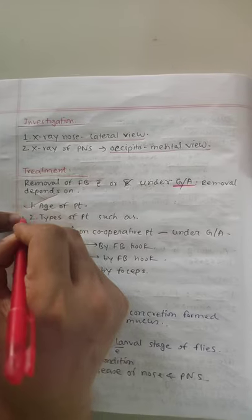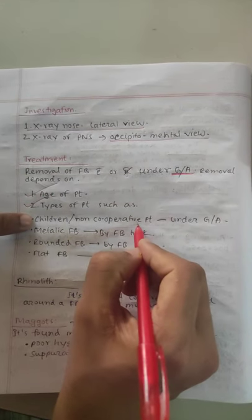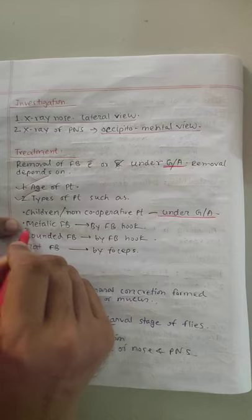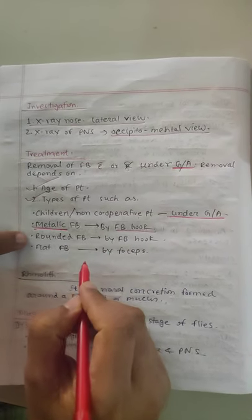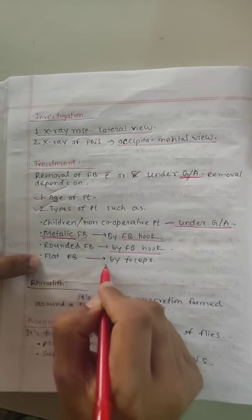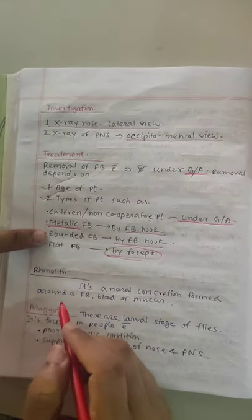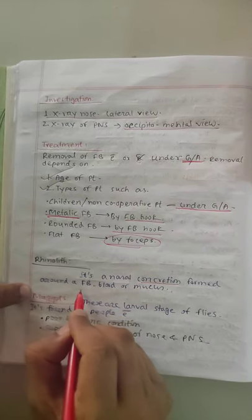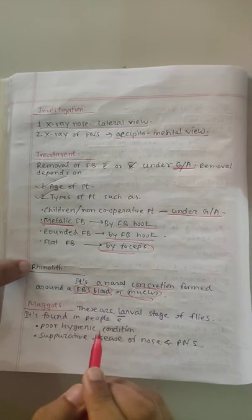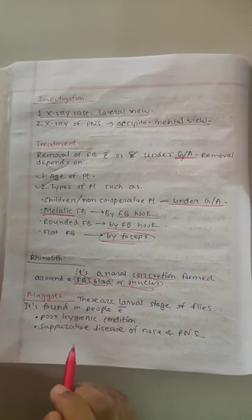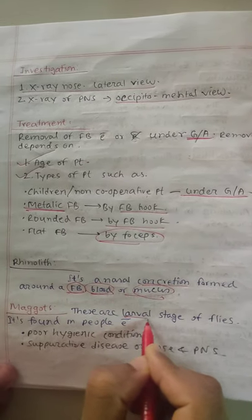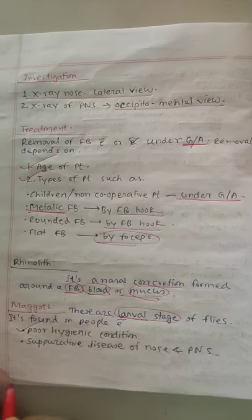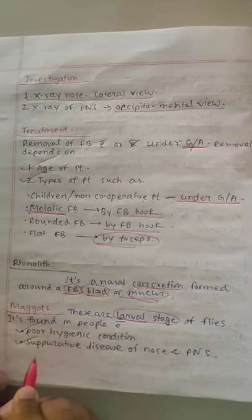The factors considered are the age of the patient and the type of foreign body. In children who are non-cooperative, general anesthesia may be needed. If the foreign body is not removed, it can cause rhinolith. Rhinolith means it is a nasal concretion formed around the foreign body, blood, and mucus. Maggots are the larval stages of flies. This condition occurs with poor hygienic conditions and suppurative disease of the nose and paranasal sinuses.